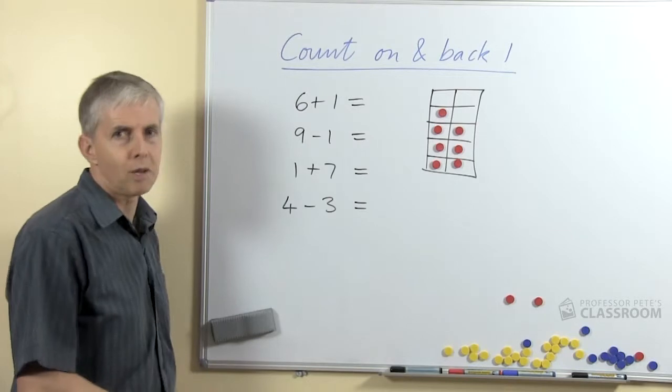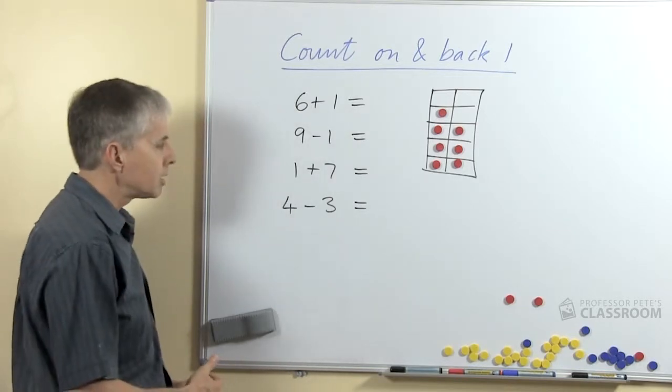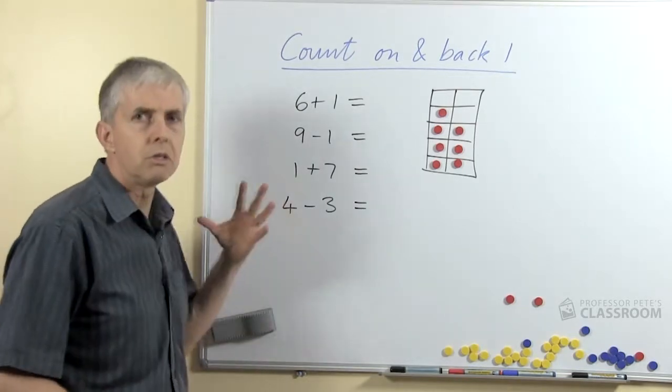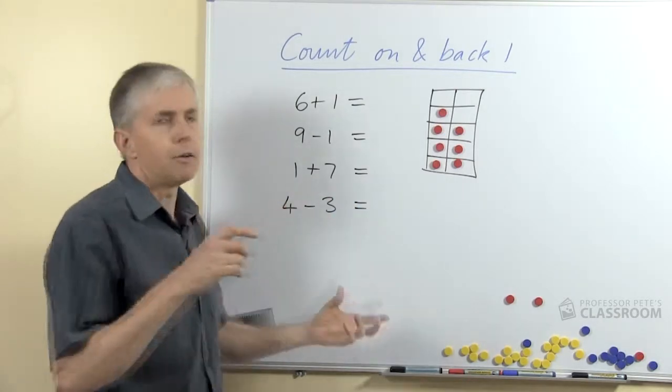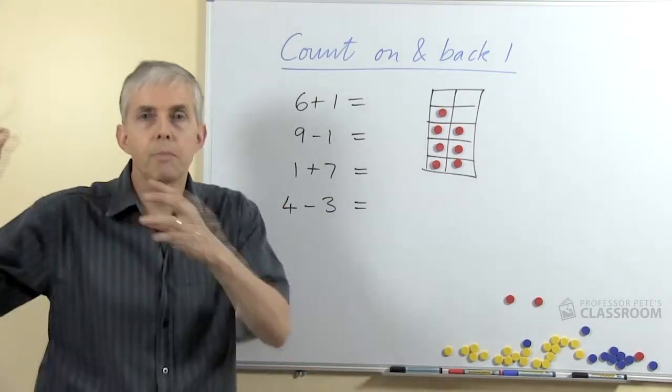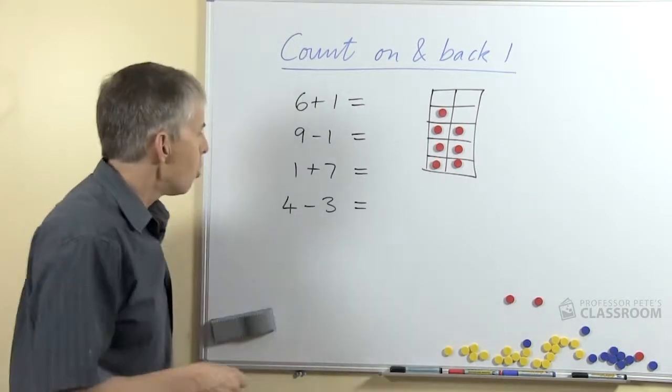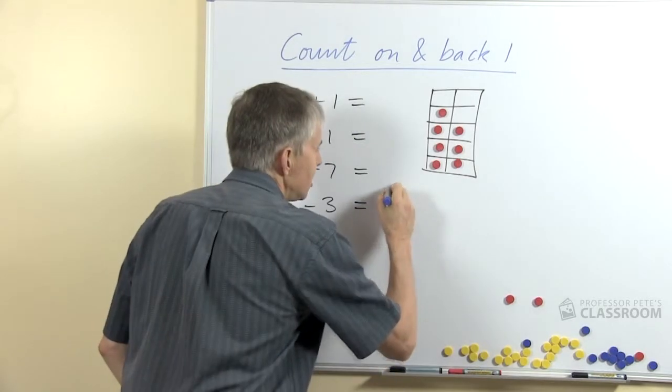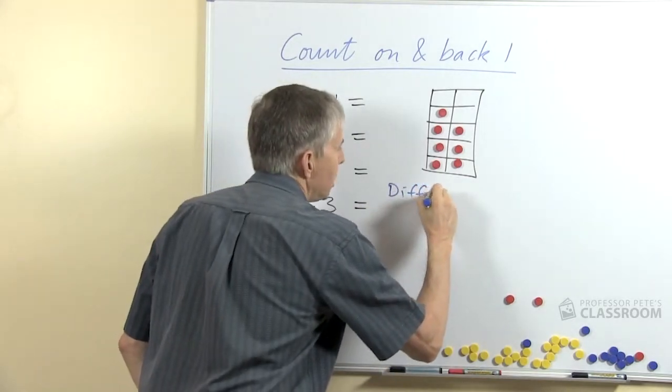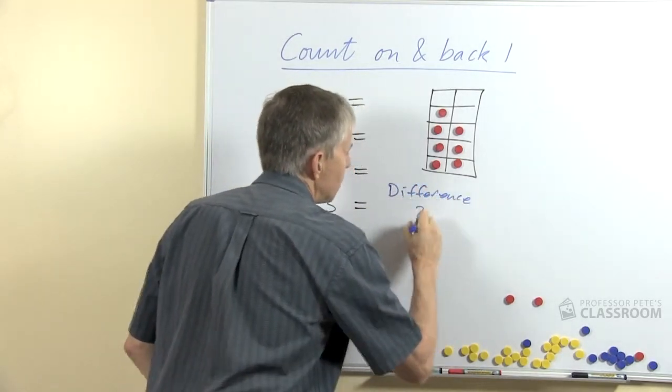The 4th sort is the trickiest. 4 take away 3 relies on students knowing that 4 take away 1 is 3 or 3 plus 1 is 4, or basically what we're looking at here is, what's the difference between these two numbers?